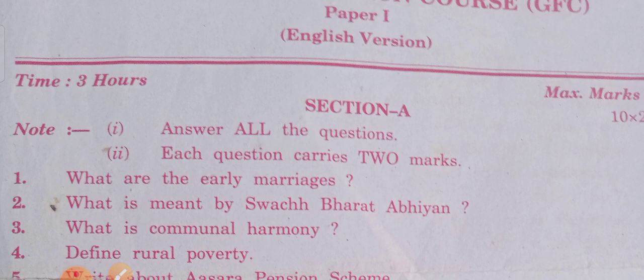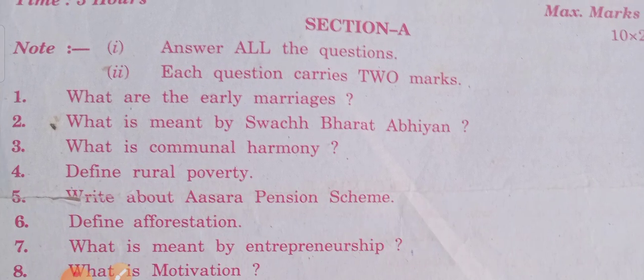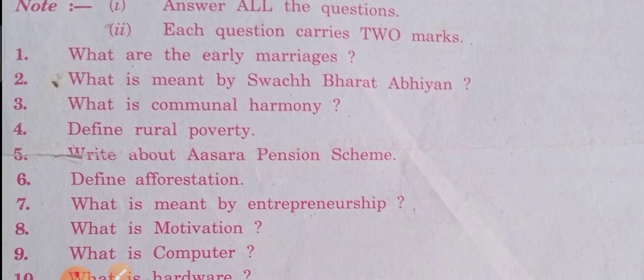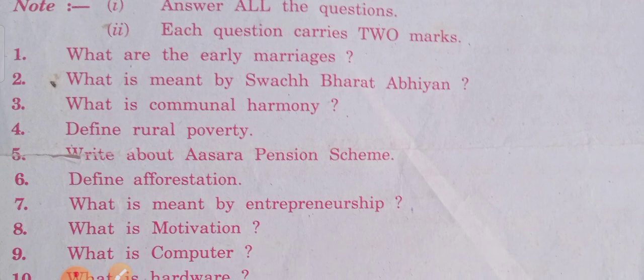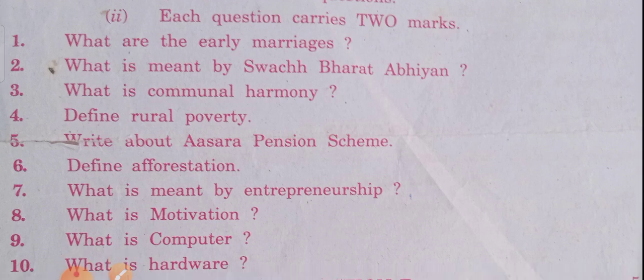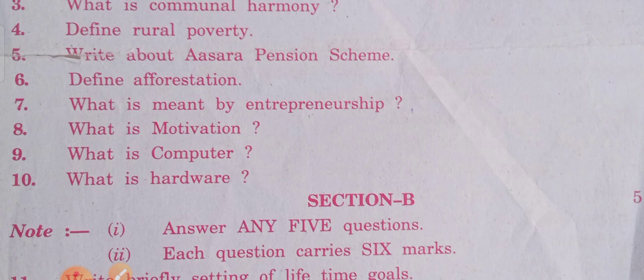Model question paper 1. GFC, Section A. First year students, you don't have any choice for Section A. There are 10 questions. You have to be thorough with these 10 questions definitely. Out of 10, you may get 5 questions.